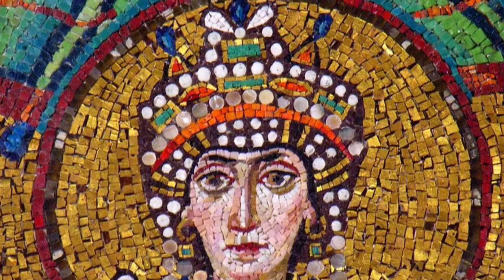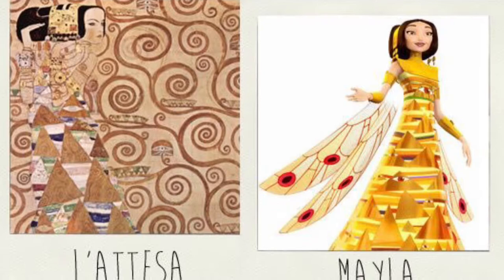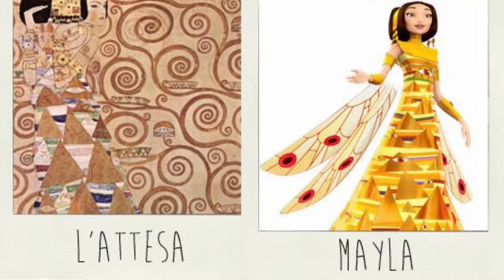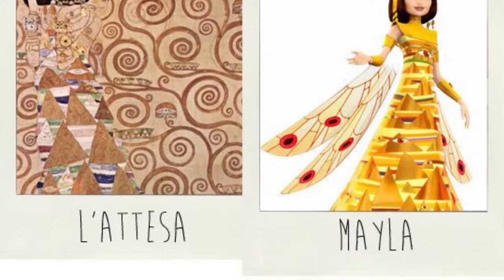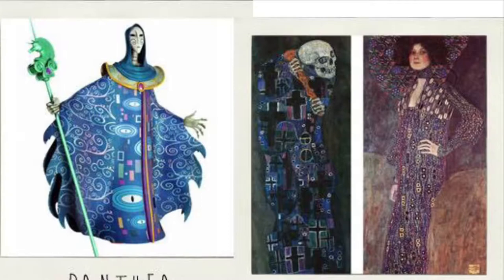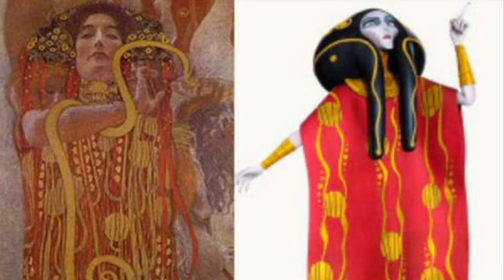Look at all the beautiful patterns and detail in this art. Klimt still inspires people today — these are some characters from an animation called Mia and Me who were direct descendants of paintings by Klimt. Look at Klimt's painting on the left and the character on the right hand side. And here's an evil character from the same animation — look at how that character was inspired by two of Klimt's paintings.